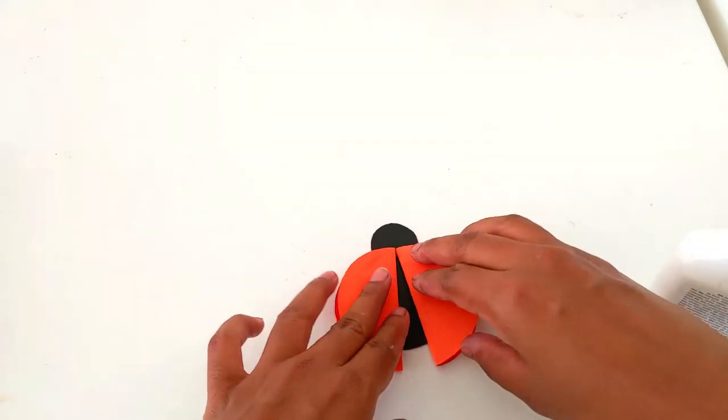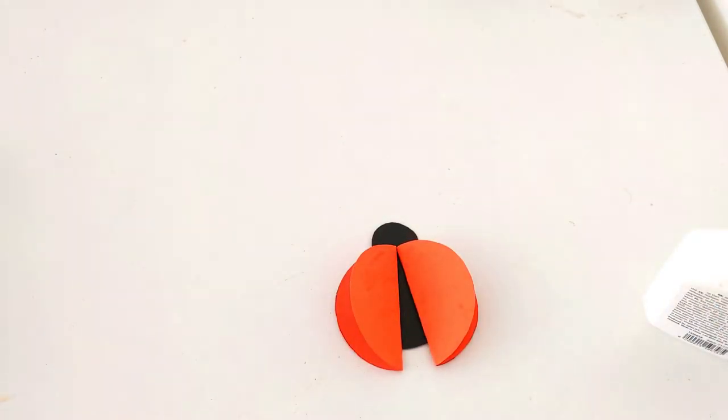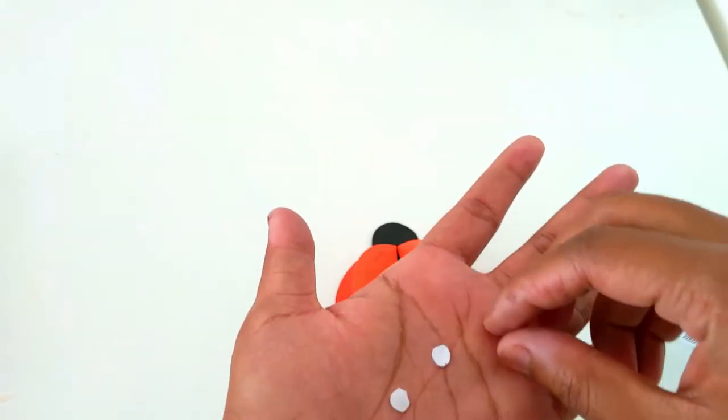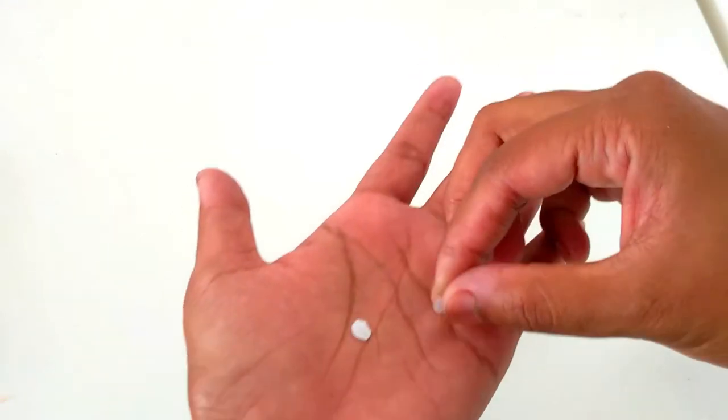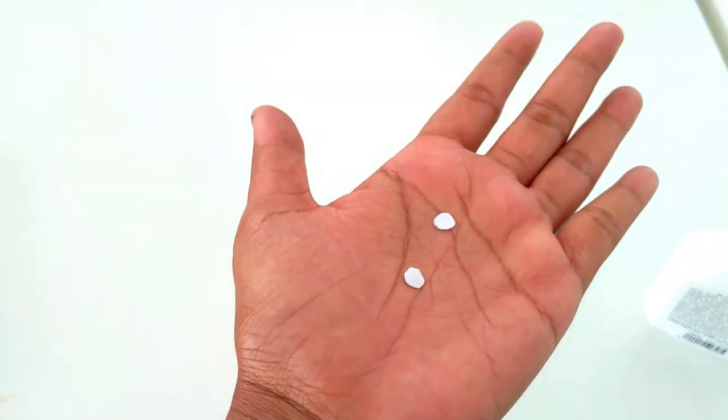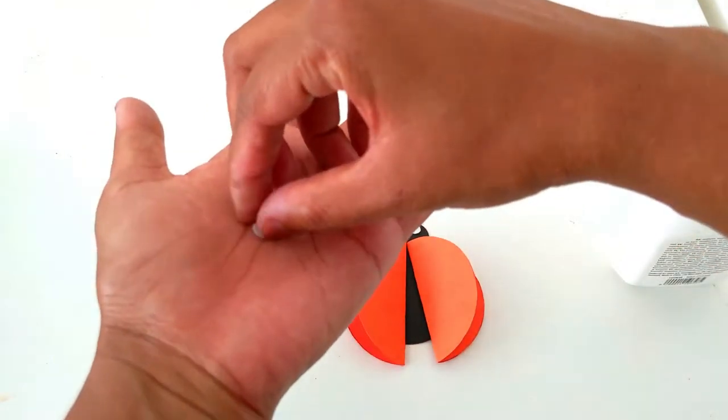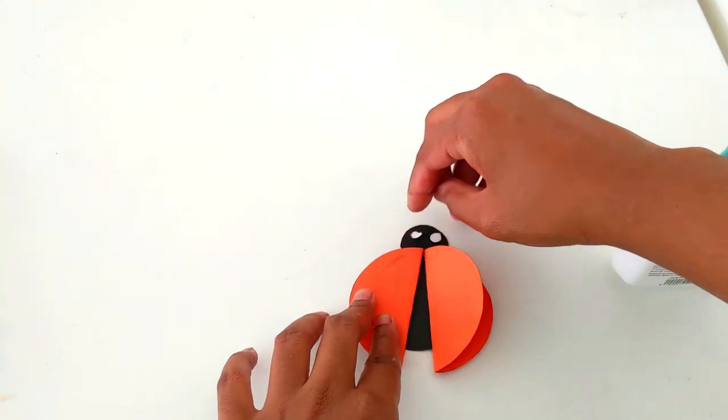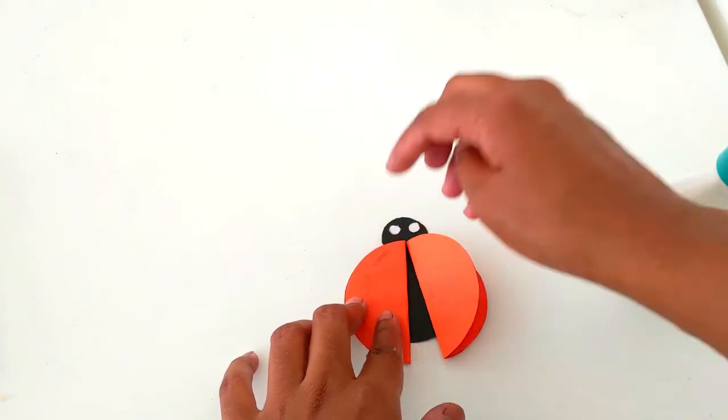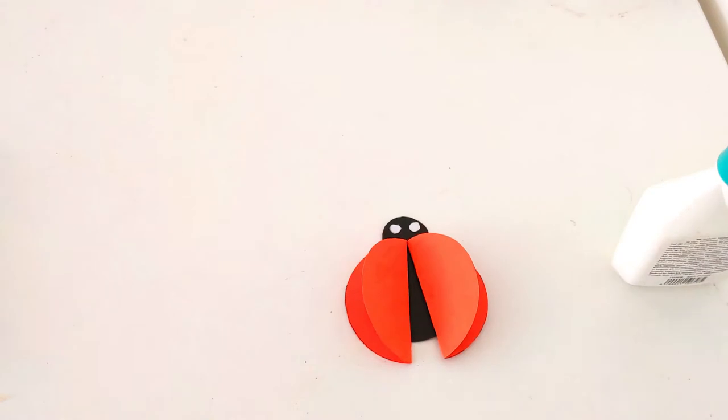Now let's put some eyes here. I have taken two small white circles. I'll put them as eyes.